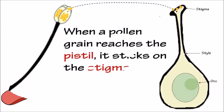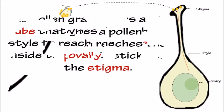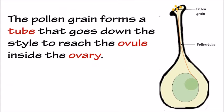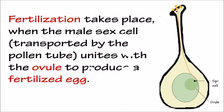When a pollen grain reaches the pistil, it sticks on the stigma. The pollen grain forms a tube that goes down the style to reach the ovule inside the ovary. Fertilization takes place when the male sex cell transported by the pollen tube unites with the ovule to produce a fertilized egg.